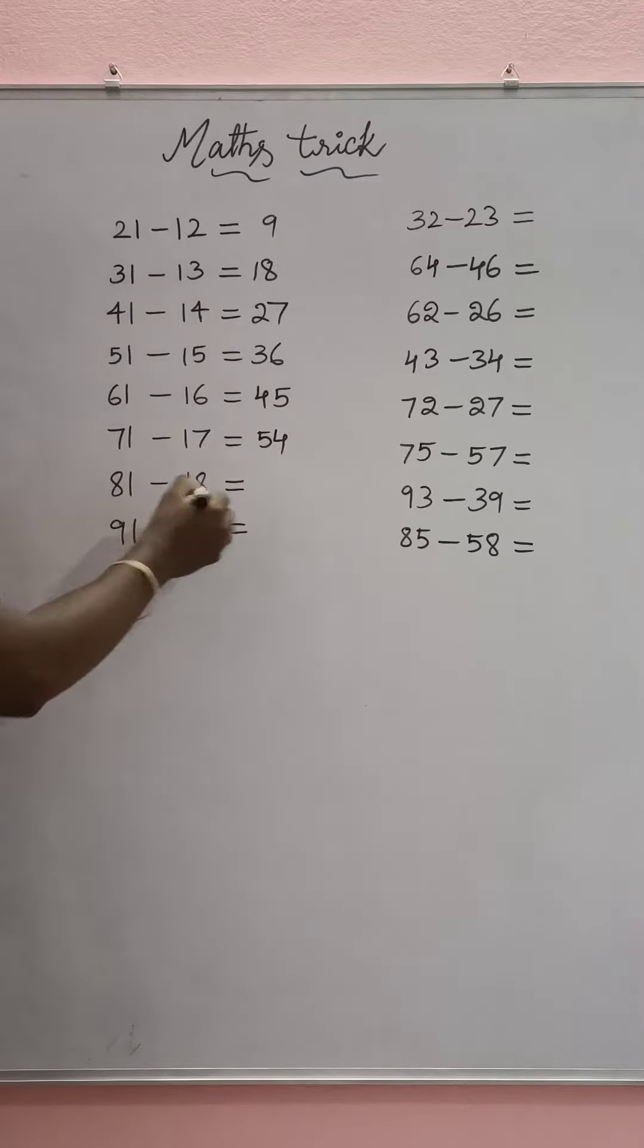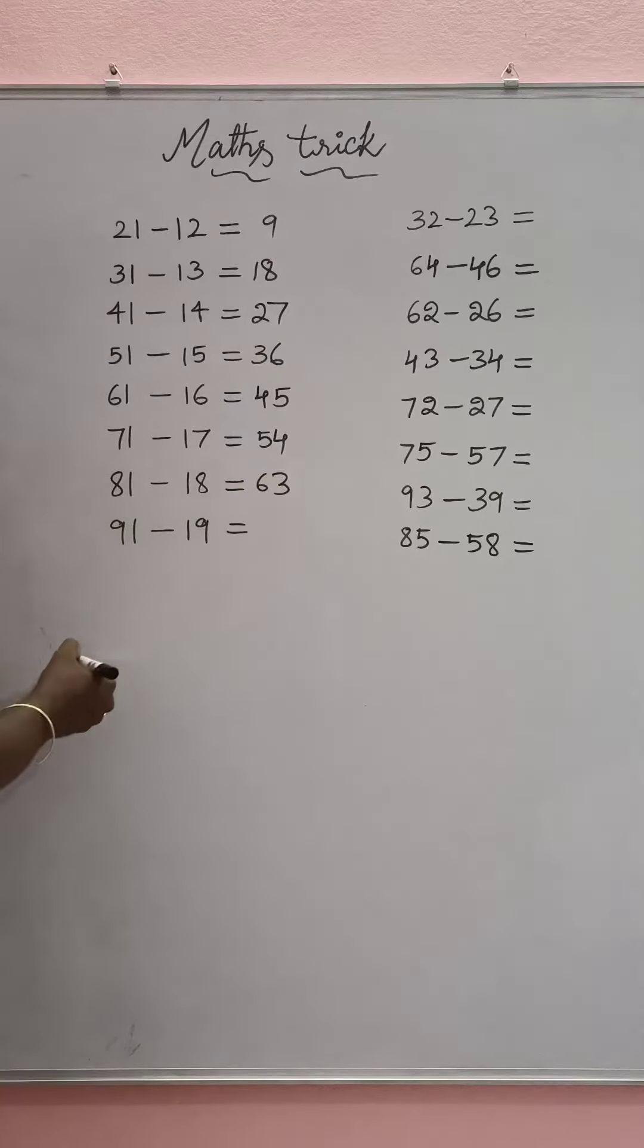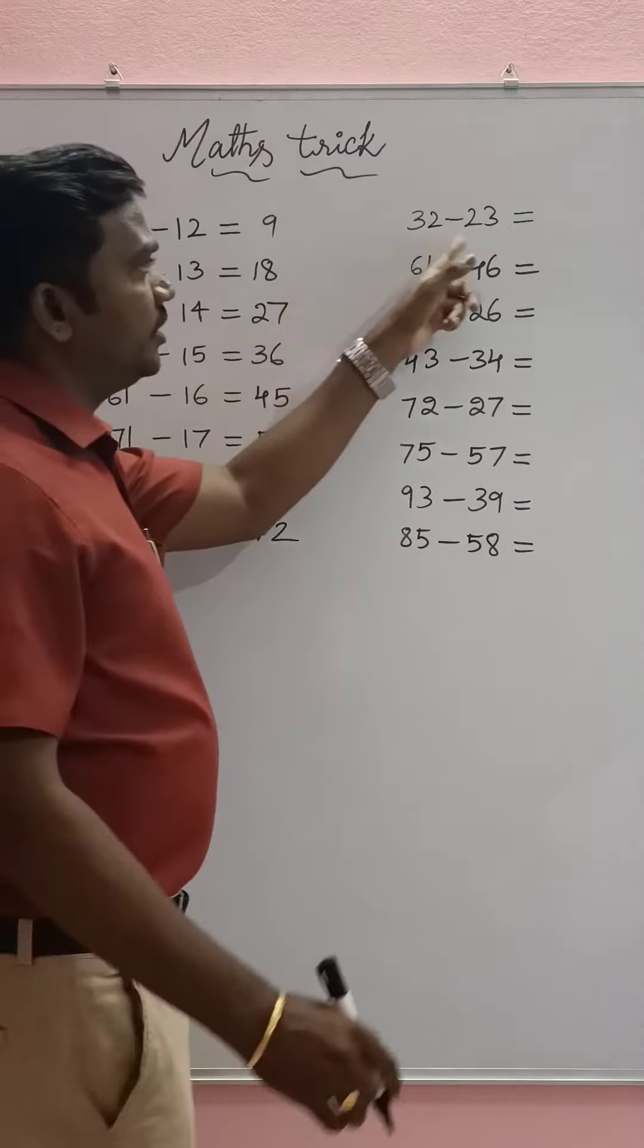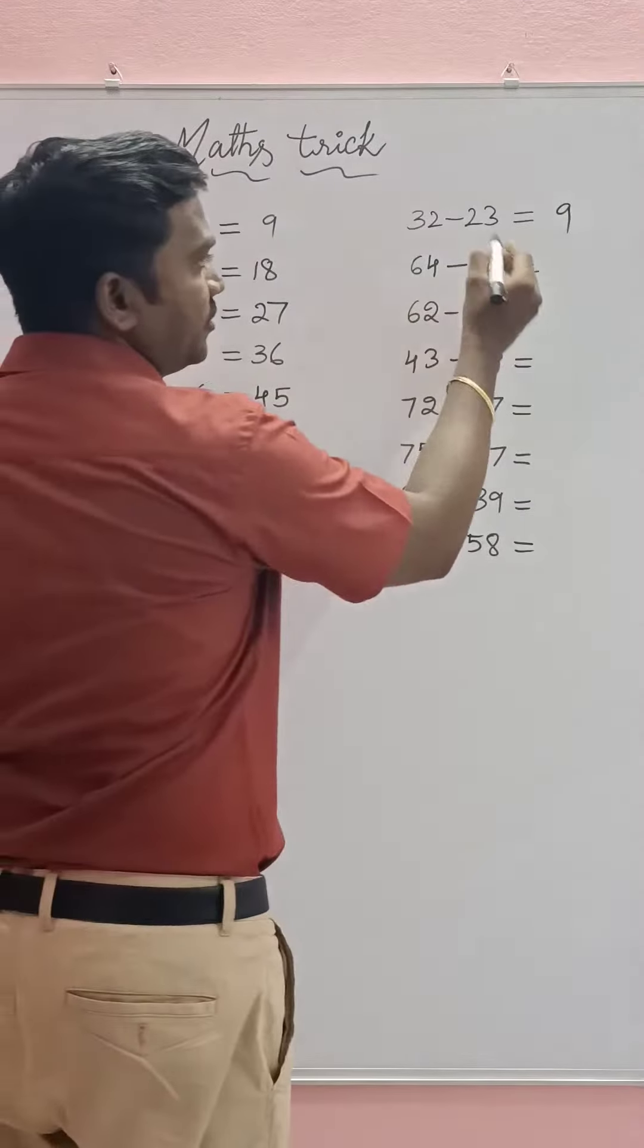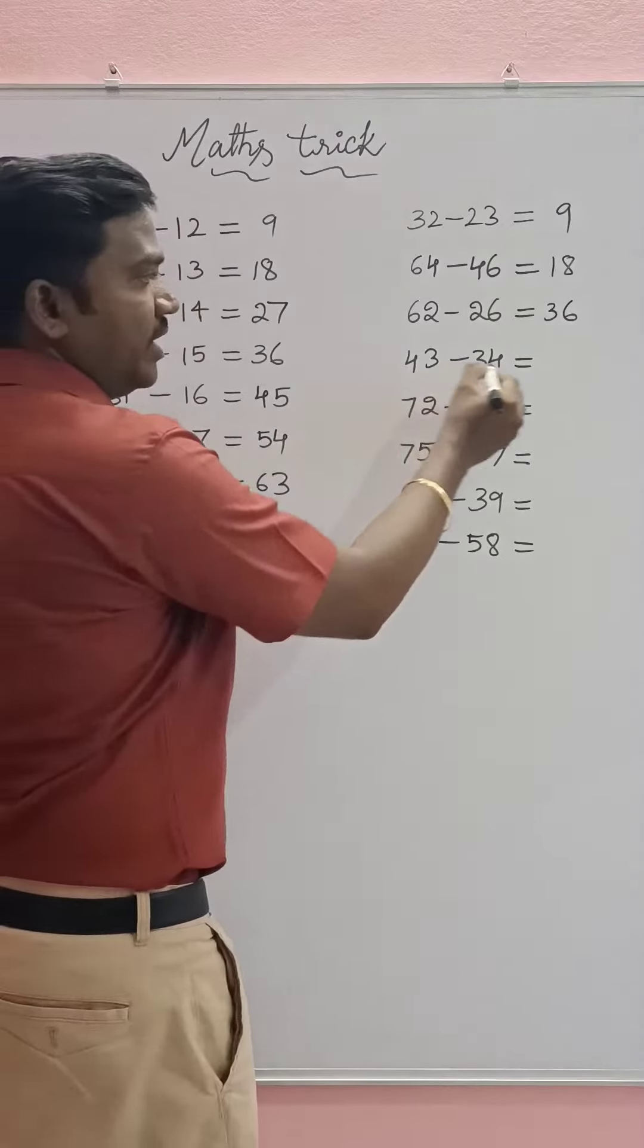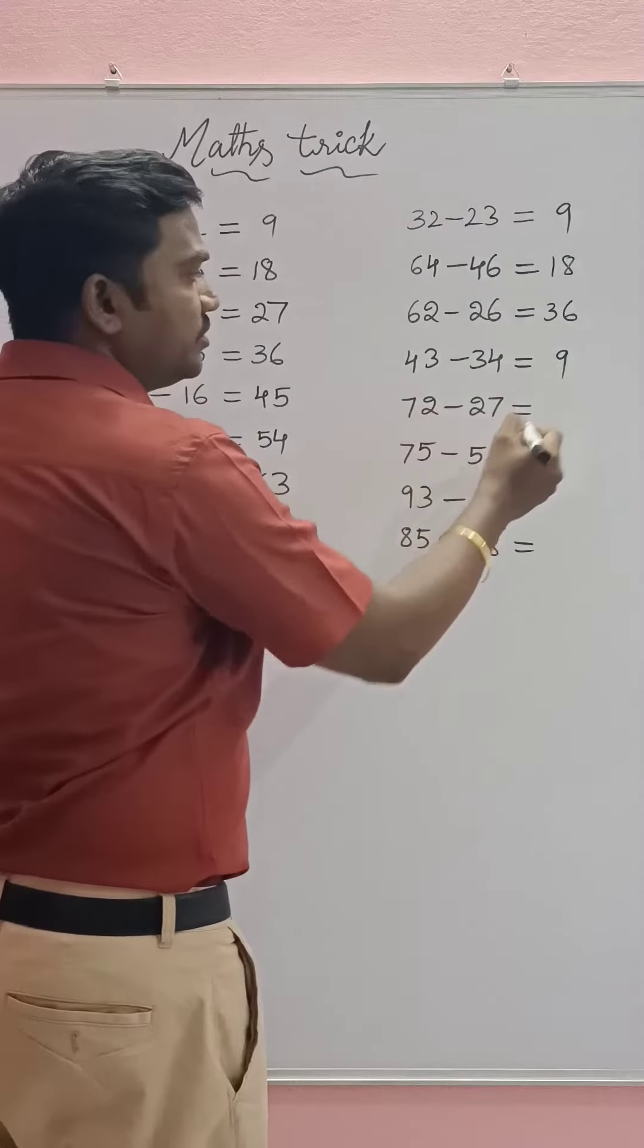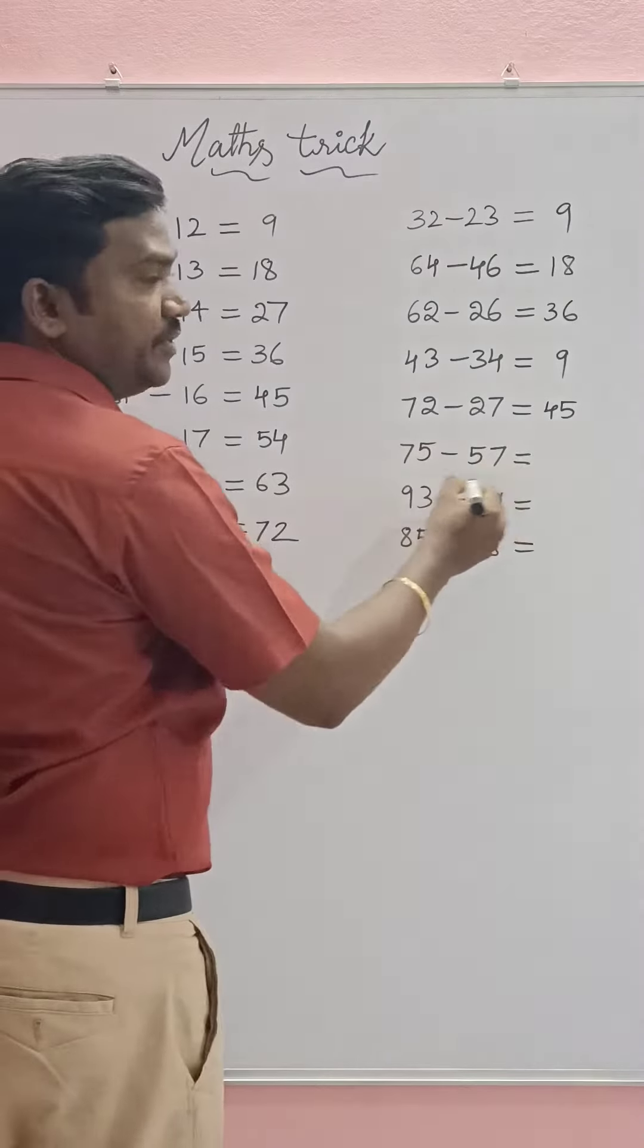81 minus 18 equals 63, 91 minus 19 equals 72. Let us see some more examples: 32 minus 23 equals 9, 64 minus 46 equals 18, 62 minus 26 equals 36, 43 minus 34 equals 9, 72 minus 27 equals 45, 75 minus 57 equals 18.